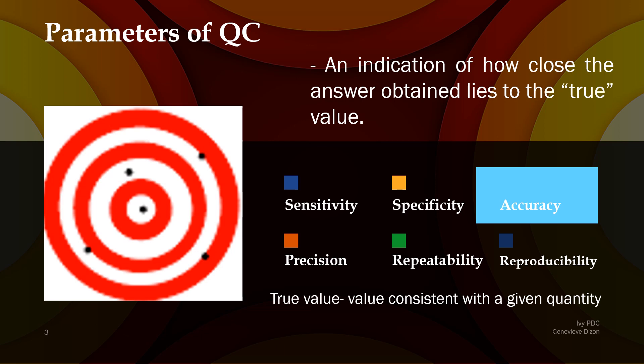To give another example, we usually use a target chart, where the center of the chart represents the true value. If the test result is located at the center, that means the test was able to get the true value. Among five tests represented as black dots, only the one at the center gave an accurate result — there is only one test that reflected the true value. The rest of the results are not accurate, and when a test is not accurate, we call this bias.